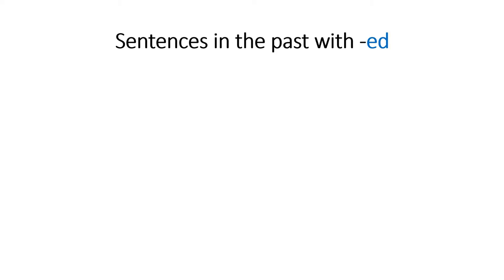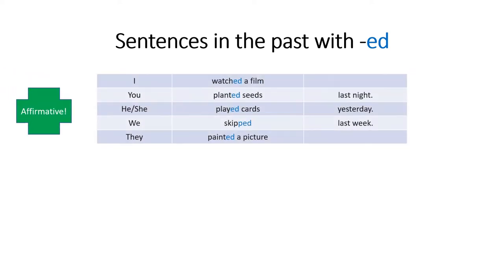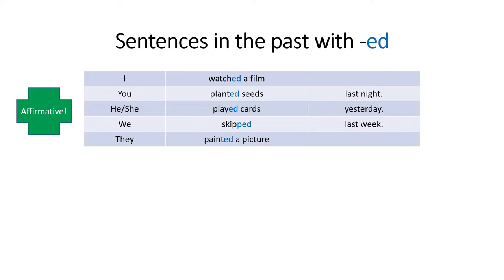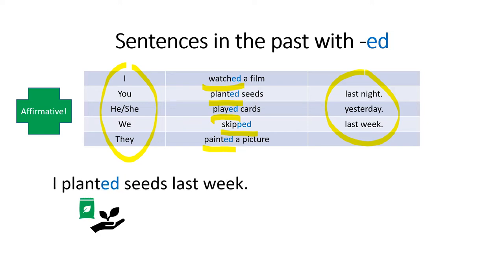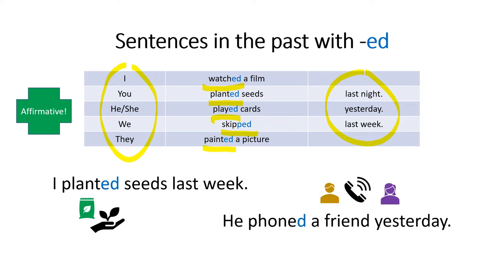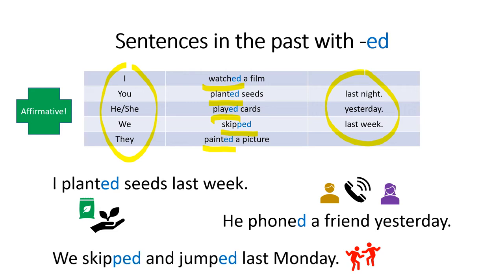So now we can make sentences in the past with -ed. Let's start with affirmative sentences. Here we have our formula: we start with the person or people we are talking about, then we have our verbs with -ed — watched, planted, played — and finally the time in the past. For example: I planted seeds last week. He phoned a friend yesterday. Or: we skipped and jumped last Monday.